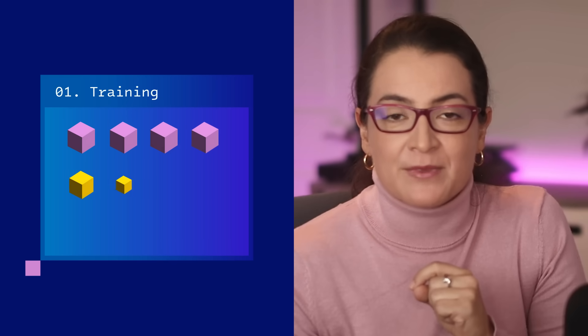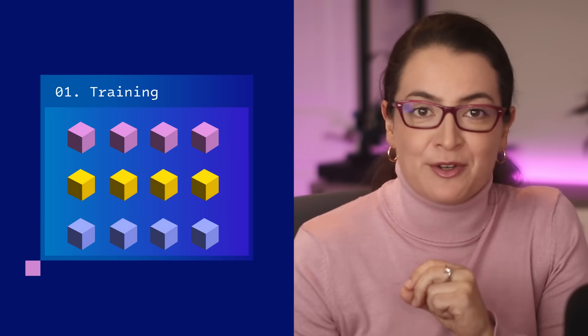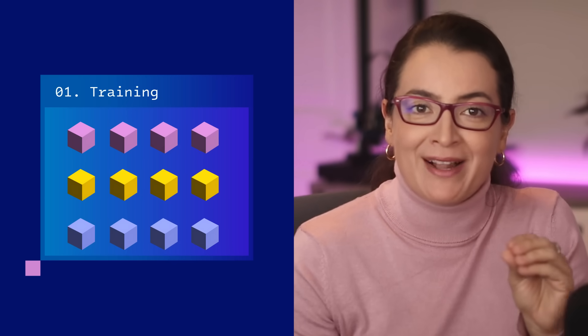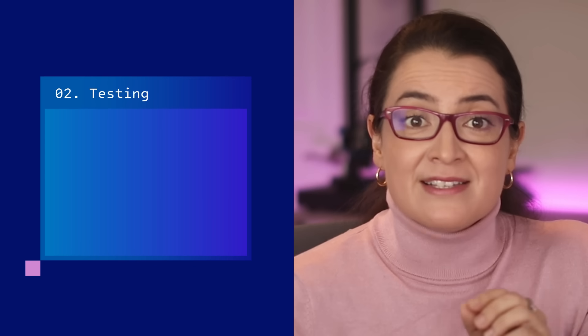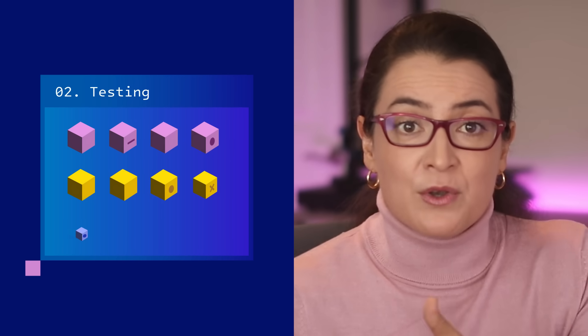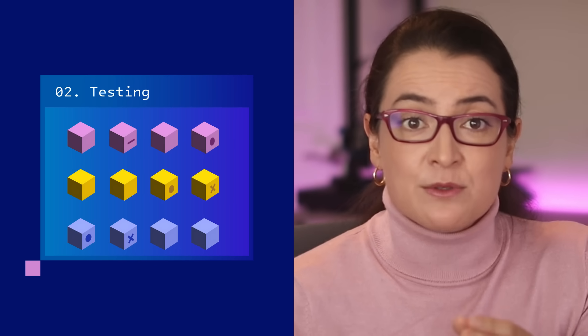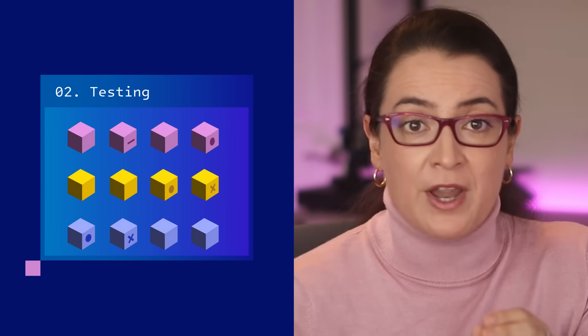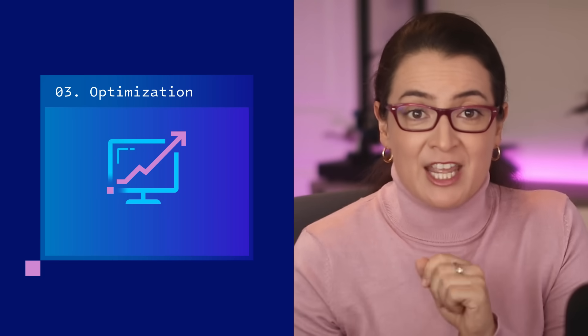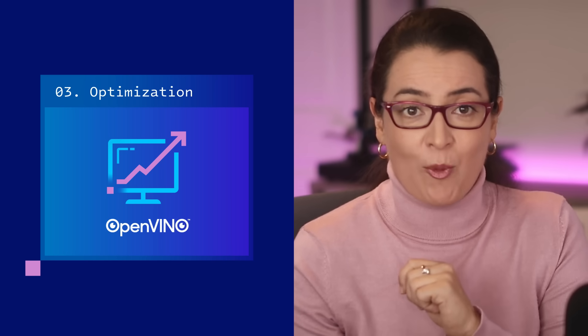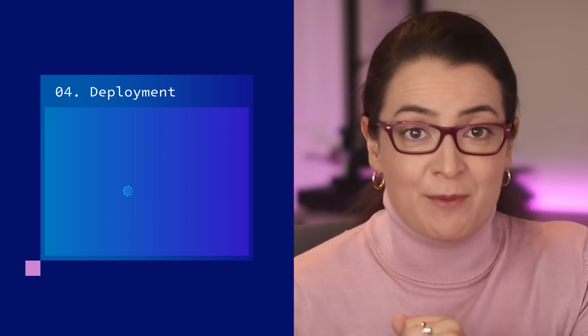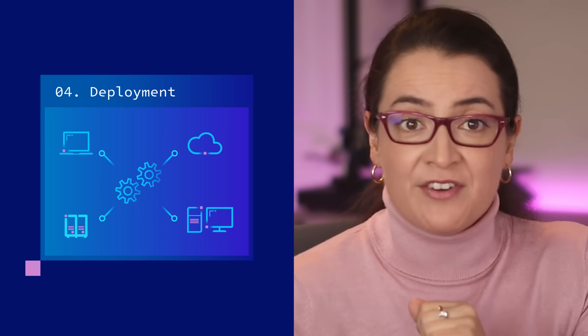Here is how our solution works in four steps. First is training: train your anomaly detection model using only normal images — this is unique to unsupervised detection. Second is testing: use both normal and abnormal images to test the performance of the trained model. Third is optimization: improve the performance and efficiency of your model by using OpenVINO. The last one is deployment: deploy your solution on a wide variety of hardware.